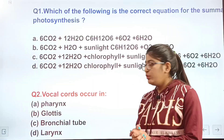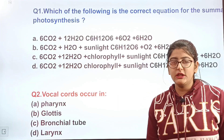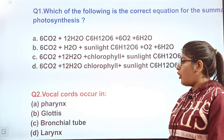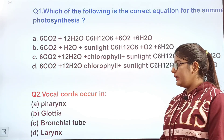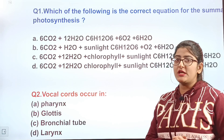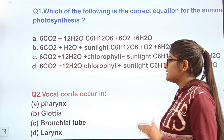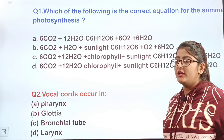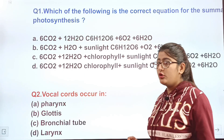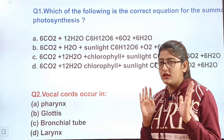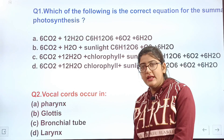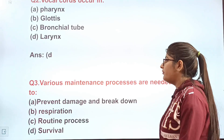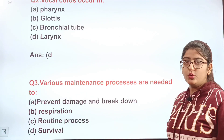Question 2: Vocal cords occur in — option A pharynx, option B glottis, option C bronchial tube, or option D larynx. Write the correct answer quickly in your notebook or comment section, and later check from the description box.